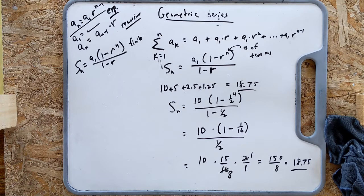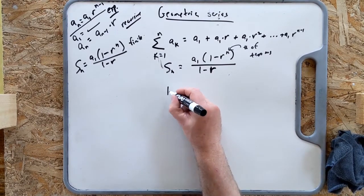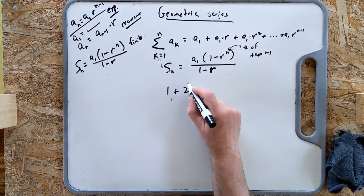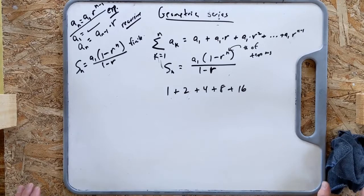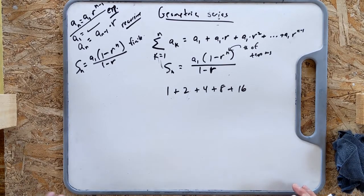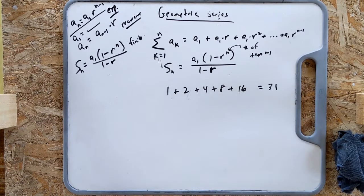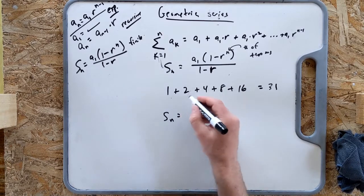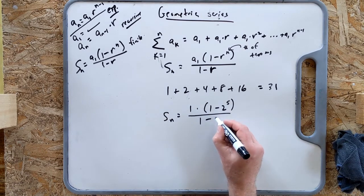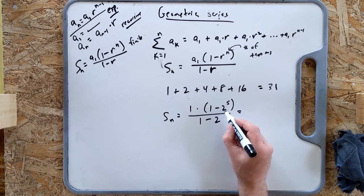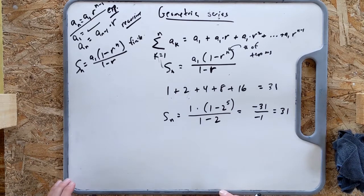Practice with the equation: find the sum of 1, 2, 4, 8, 16. Pause and try it. Adding them: that's 31. Using the formula: a_1 is 1, r is 2, n is 5 terms, divided by (1 minus 2). S equals 1 times (1 minus 2 to the 5th) over (1 minus 2). 2 to the 5th is 32, so this is (1 minus 32) over negative 1, which is negative 31 over negative 1, or 31. Same answer.